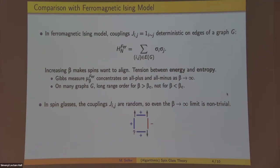Whereas in a spin glass model, we have these random coefficients. Even if we're looking at the maximum value of our function, it's very non-trivial because we can't satisfy all the preferences.